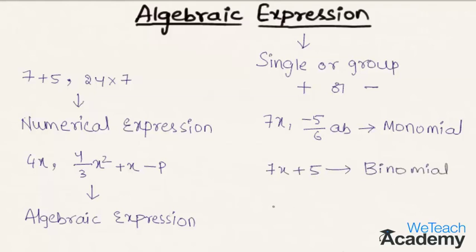Let us consider another example: 3x minus 3y plus 5z. If an expression contains three terms, then we call such expression a trinomial expression.